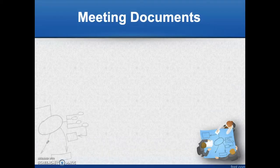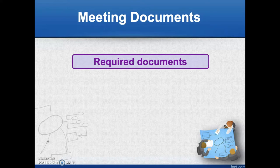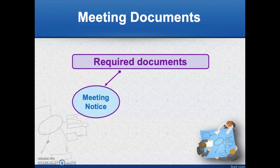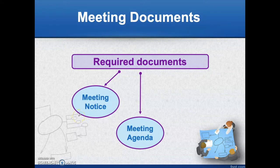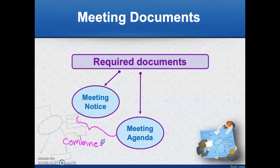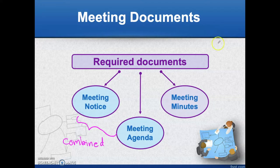I'll begin with meeting documents. When you conduct a meeting, there are certain documents that are compulsory, and these are among the required documents. The first one is a meeting notice, which is to inform all the participants of the impending meeting. The next document is a meeting agenda. Quite often you will see that the meeting notice and the meeting agenda are combined into one document. Another document that is required for a meeting is the minutes of the meeting. This document is usually prepared after the meeting.